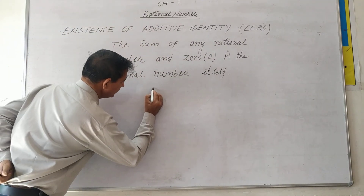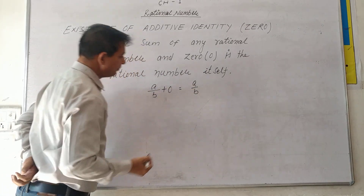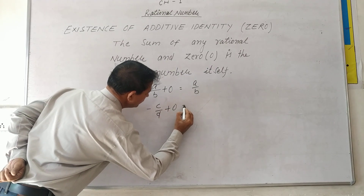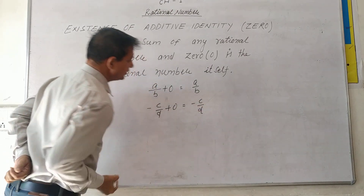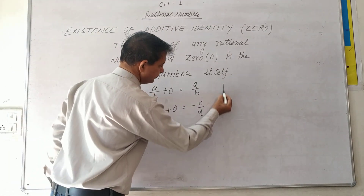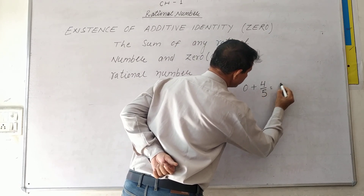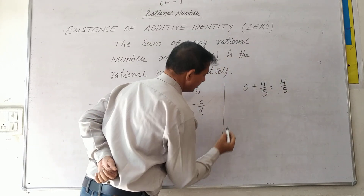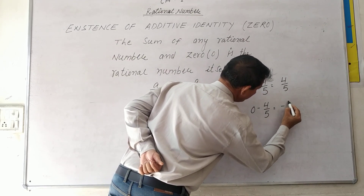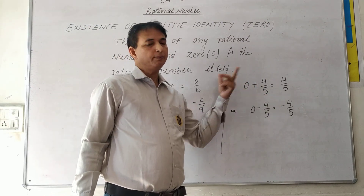Next, the additive identity property. A upon B plus 0 equals A upon B. A rational number can also be negative: minus C upon D plus 0 equals minus C upon D. For example, 0 plus 4 upon 5 equals 4 upon 5, and 0 plus minus 4 upon 5 equals minus 4 upon 5. So when you add 0 to any rational number, the same number repeats.